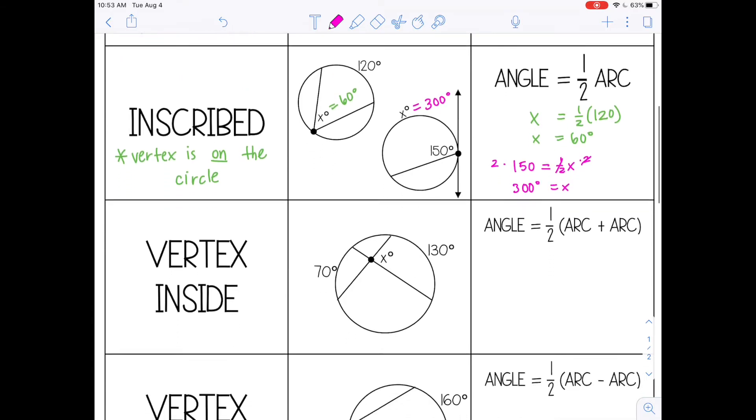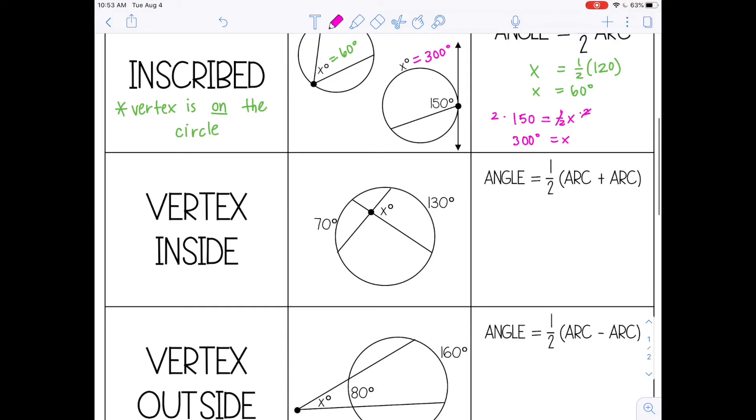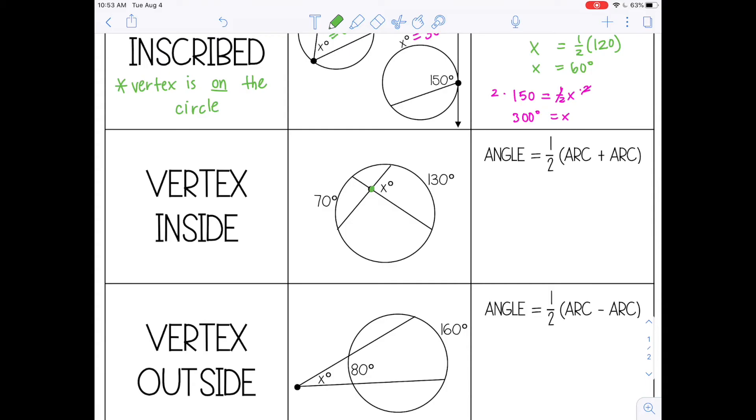All right, the next type is vertex inside, and as the name suggests, the vertex is inside the circle, but it's not the center of the circle.